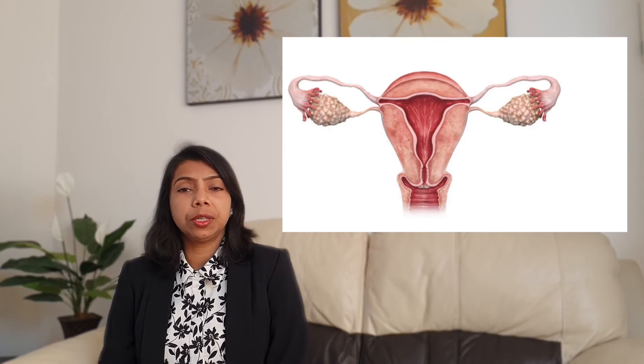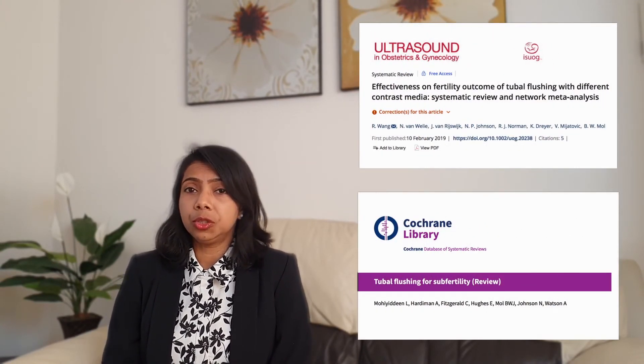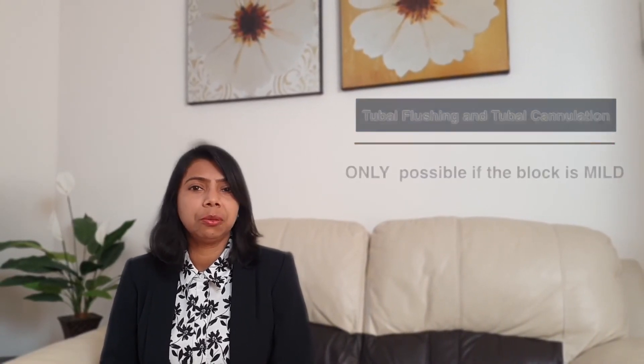Only in certain cases, where the block is in the proximal part of the tube close to the uterus, it can be treated without surgery. The treatments are tubal flushing and tubal cannulation. Tubal flushing basically means doing a dye test with HSG — the dye flows through the tube and clears up any minor blockage due to a mucous plug. There is good evidence that women do fall pregnant naturally within three to six months after a dye test with HSG. Tubal cannulation is a procedure which can be done at the same time as HSG. Under X-ray guidance, a fine wire is passed through the vagina into the uterus and to the proximal end of the tube to clear the block. It is only possible if the block is mild.